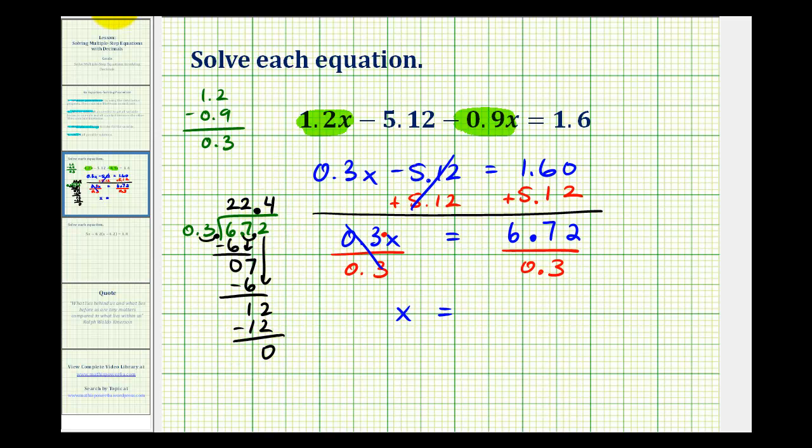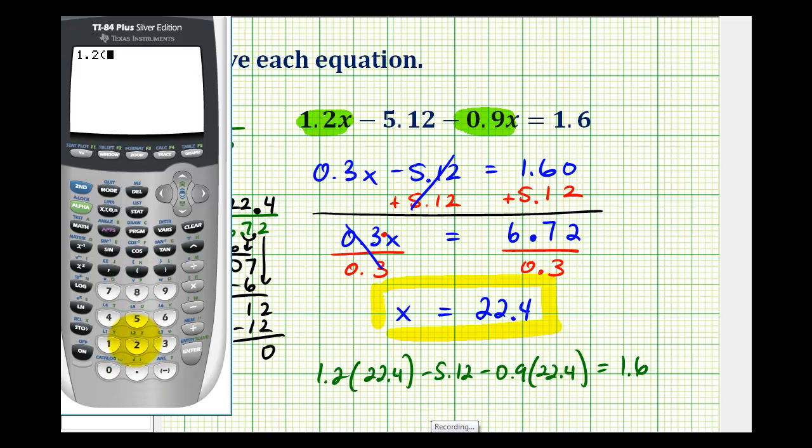So x is equal to 22.4, or 22 and 4 tenths. Which means if you replace x with 22.4, it must satisfy the original equation. So let's go ahead and check that. We want to make sure that 1.2 times 22.4 minus 5.12 minus 0.9 times 22.4 equals 1.6. Let's check this with the calculator. And we can see that it does check. Therefore, our solution is correct.